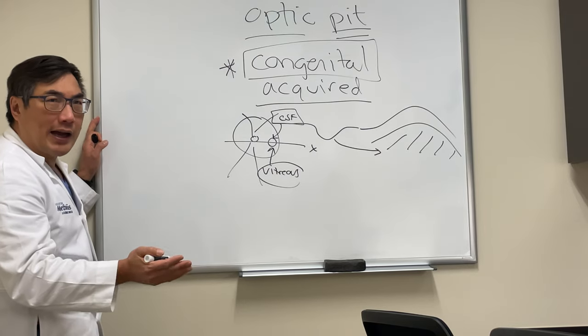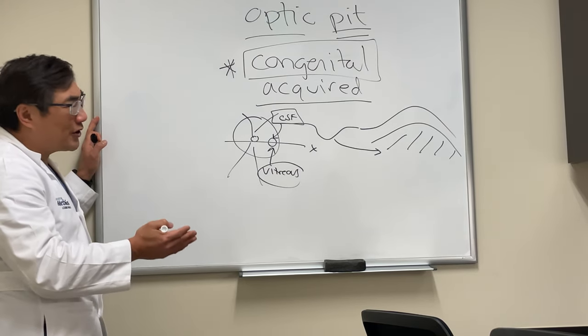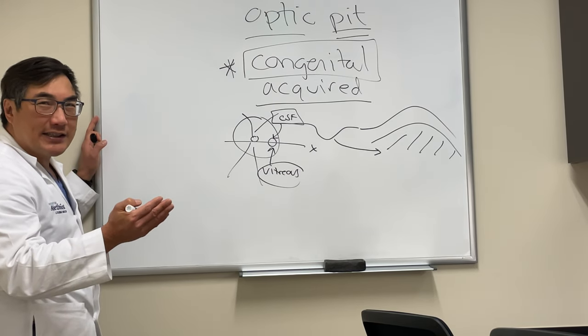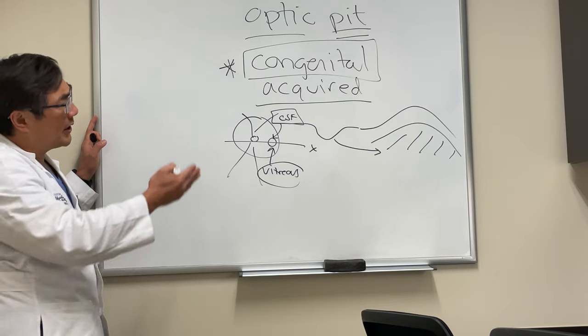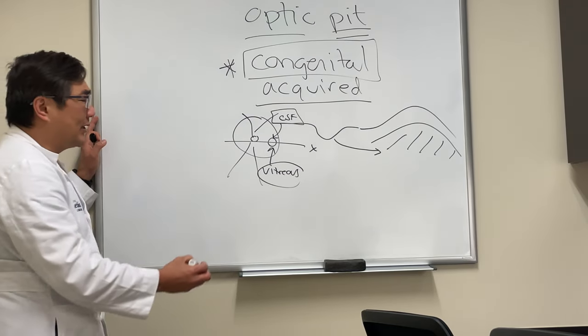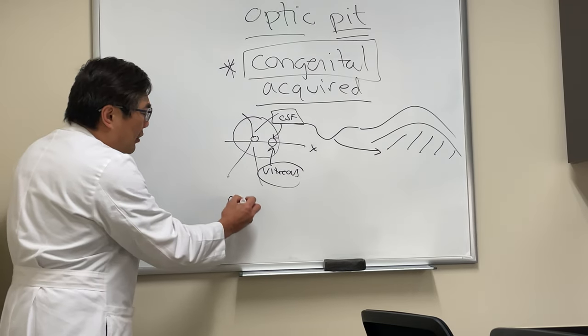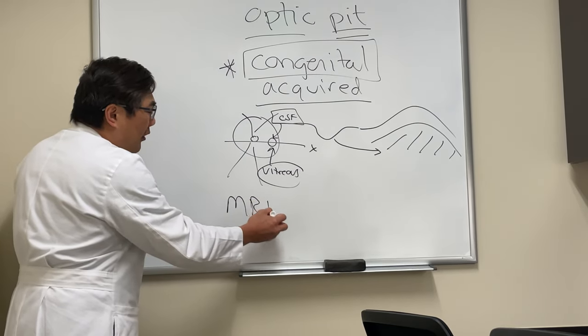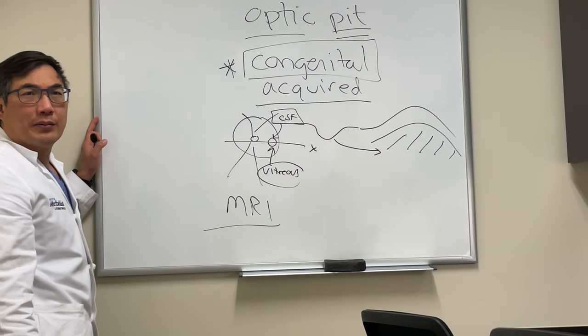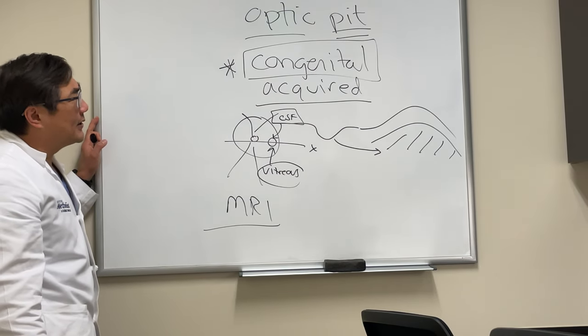You could do an MRI — sometimes there's associated fluid in the sheath or associated anomalies because it's on the spectrum of cavitary disc anomaly, so no one would fault you if you did an MRI of the head and orbit on this.